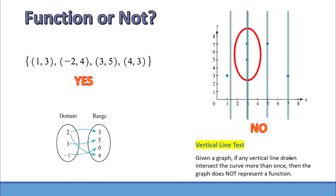And that creates what we call the vertical line test. To test if the given graph represents a function, what we need to do is simply draw or imagine drawing a lot of vertical lines. If any vertical line crosses the graph more than once, then the graph does not represent a function.